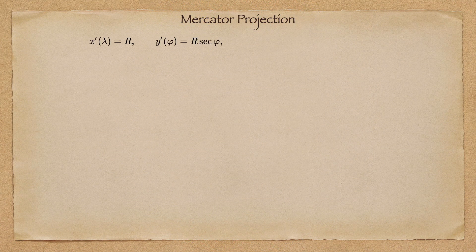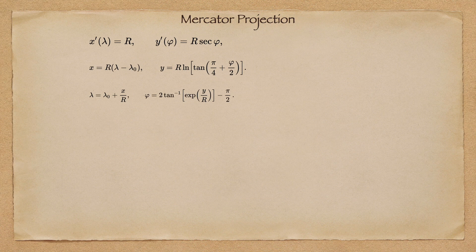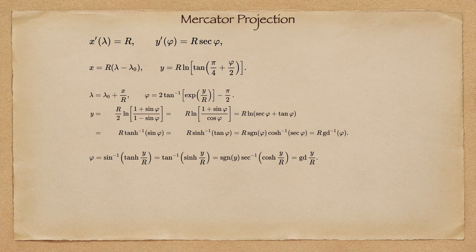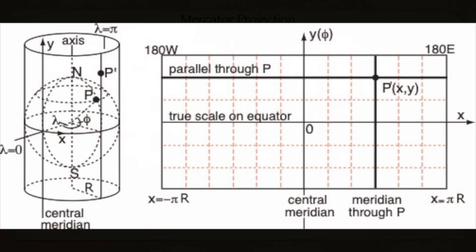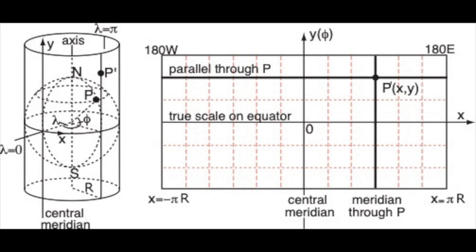Mercator never divulged how he came about his projection, but others have reverse-engineered it and have many theories. A simple way to understand it is to imagine a paper cylinder wrapped around a globe, and the map from the globe is projected onto the cylinder. When you unwrap the cylinder, you have basically a Mercator projection on a two-dimensional surface.